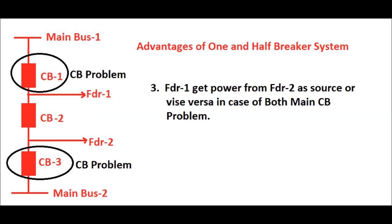Now consider a case where there is a circuit breaker problem in CB1 and at the same time CB3 is under maintenance, or vice versa — that is, a CB problem in both main bus side circuit breakers simultaneously. Even in that case, feeder 1 can still get power, sourced through feeder 2 via the tie circuit breaker CB2 in closed position.